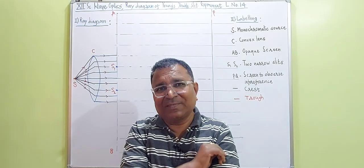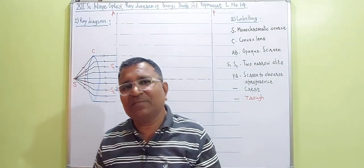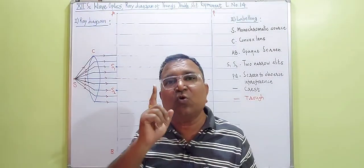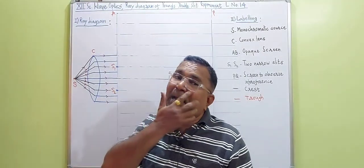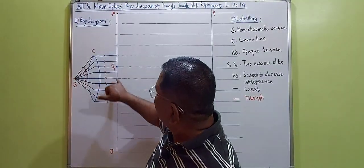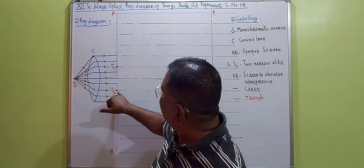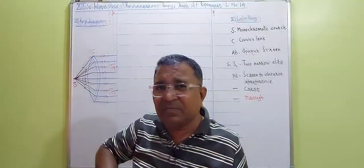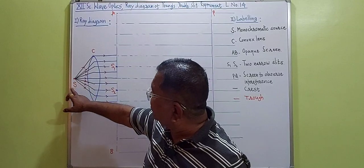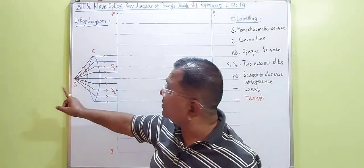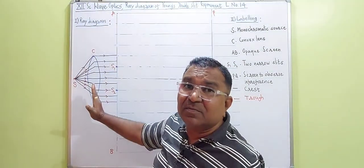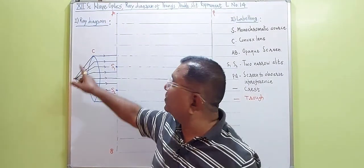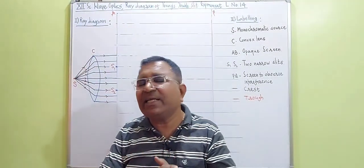Pause the video and make a pre-setting as I have done on the board. Take two sources S1 and S2 — suppose this is your notebook page — and keep the distance between S1 and S2 such that one line is in between them. This is the notebook page; this is a convex lens; this is a point source which is a monochromatic source, and we get a plane wavefront by placing this point source at the focus of the convex lens.